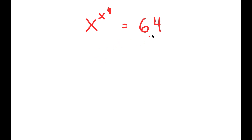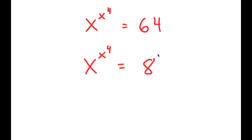To solve this, I'm going to first start by rewriting 64 as 8 squared. So I get x to the power of x to the power of 4 is equal to 8 squared.